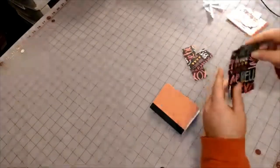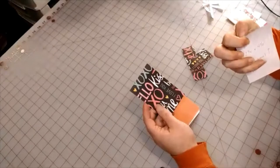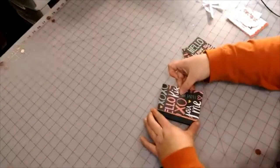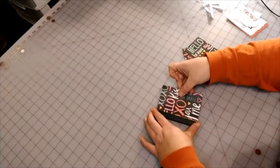When that's done, you're going to take one of your two and three-fourths by four and a half pieces and you are going to lay it on the top, just like that.